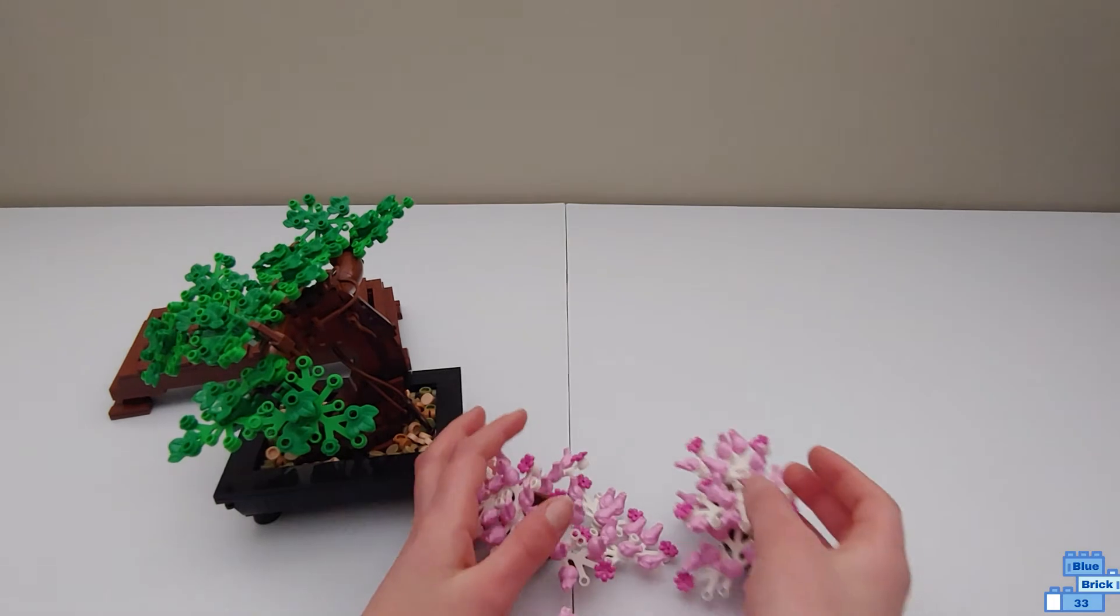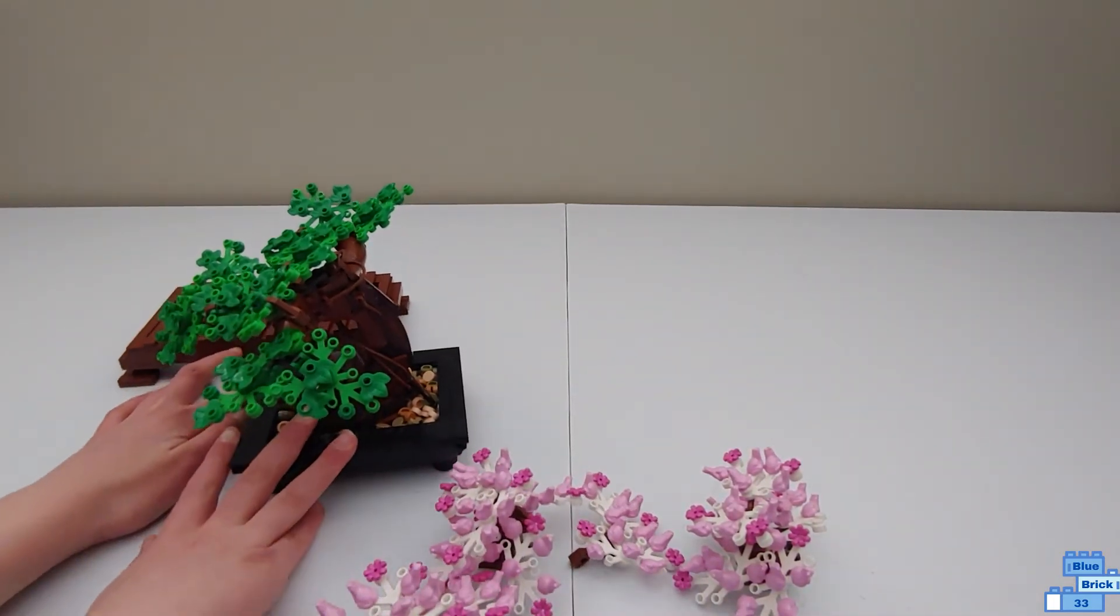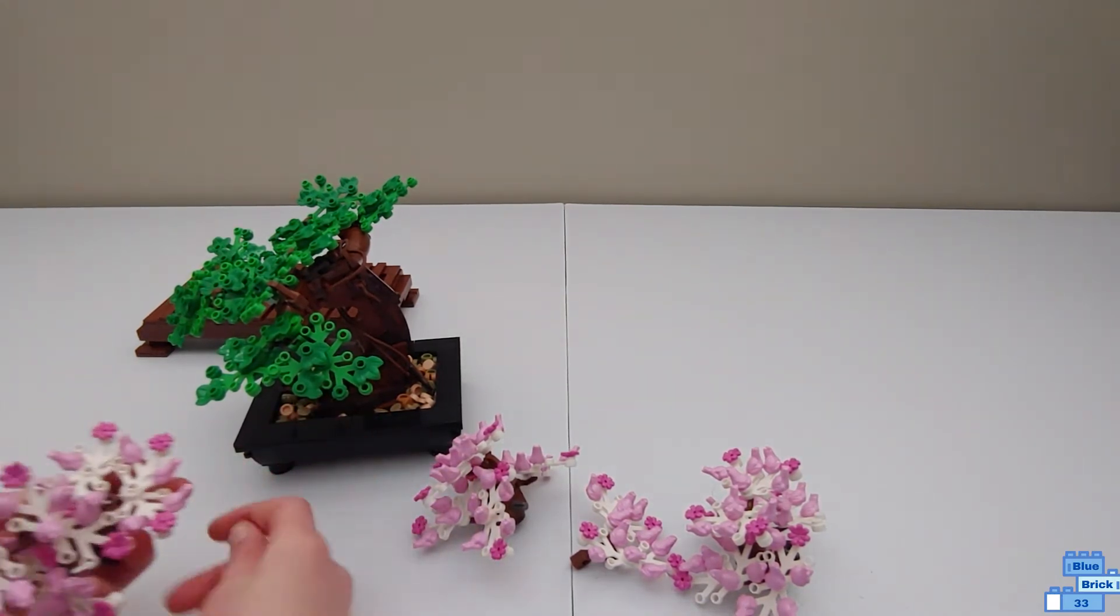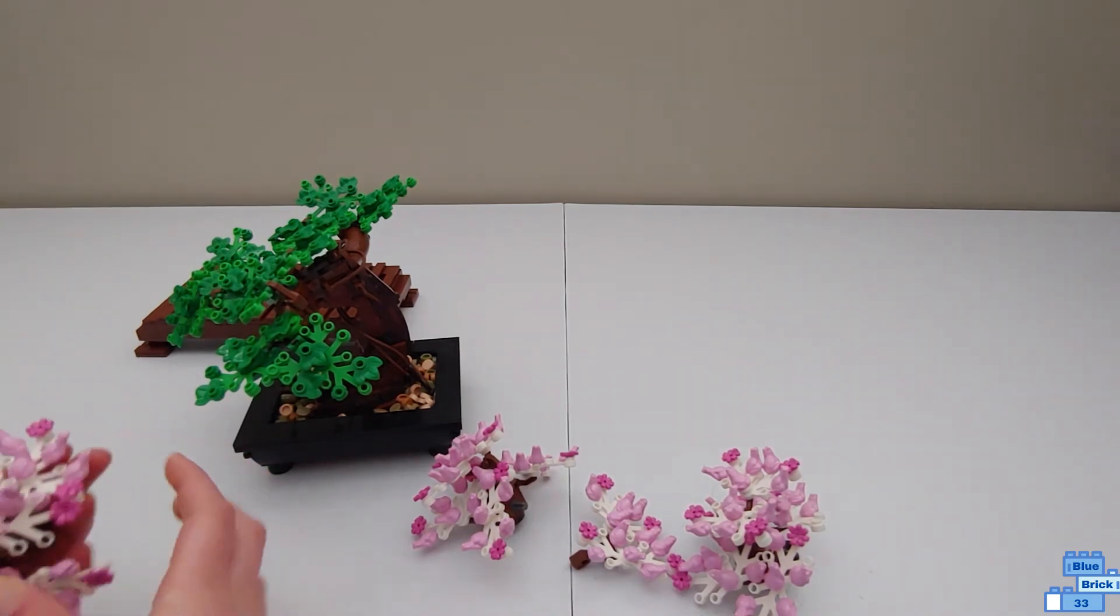Now here are the cherry blossom leaves. They're a lot more cheerful probably. They're white and pink. You actually use pink frogs on it to create the cherry blossoms.